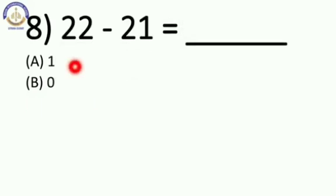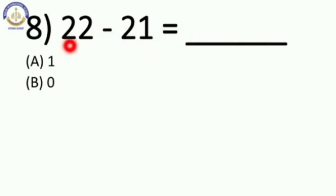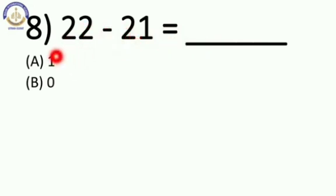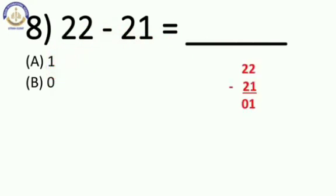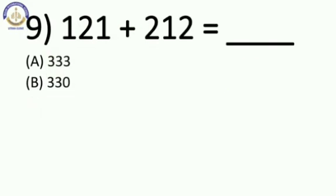Now next: 22 minus 21 is equal to blank. 22 minus 21 — agar hum number ek baar karenge, to kya milega? 1. So our answer is 1.